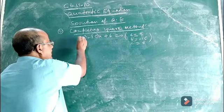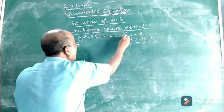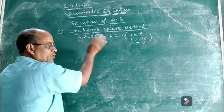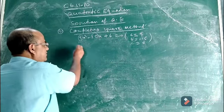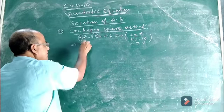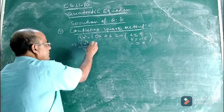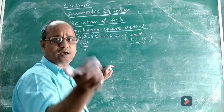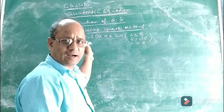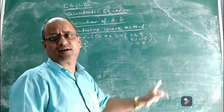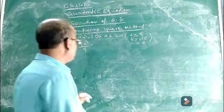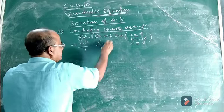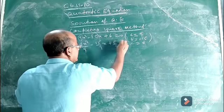If the coefficient of x² is other than 1, divide that coefficient into each term of both the LHS and RHS. So dividing every term by 9, we get: x² minus 15/9 x plus 6/9 equals 0.